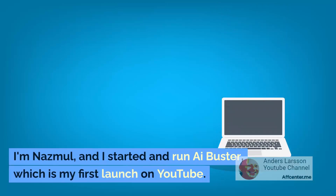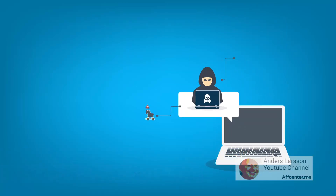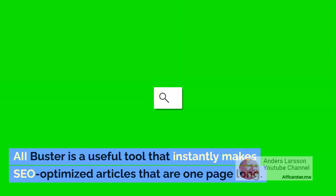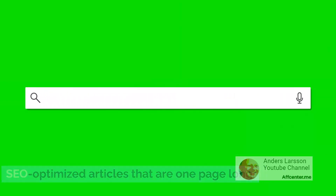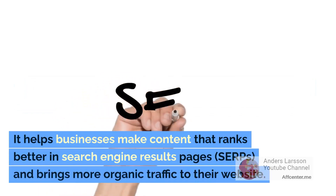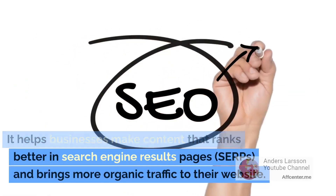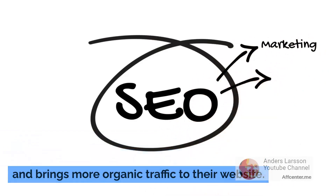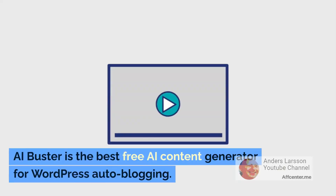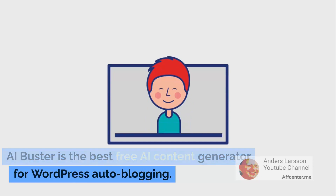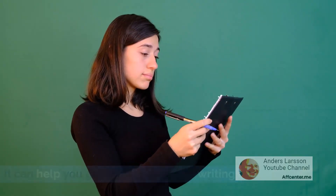I'm Nazmal and I started and run AI Buster, which is my first launch on YouTube. AI Buster is a useful tool that instantly makes SEO optimized articles that are one page long. It helps businesses make content that ranks better in search engine results pages, SERPs, and brings more organic traffic to their website. AI Buster is the best free AI content generator for WordPress auto blogging. It can help you get more out of your writing.